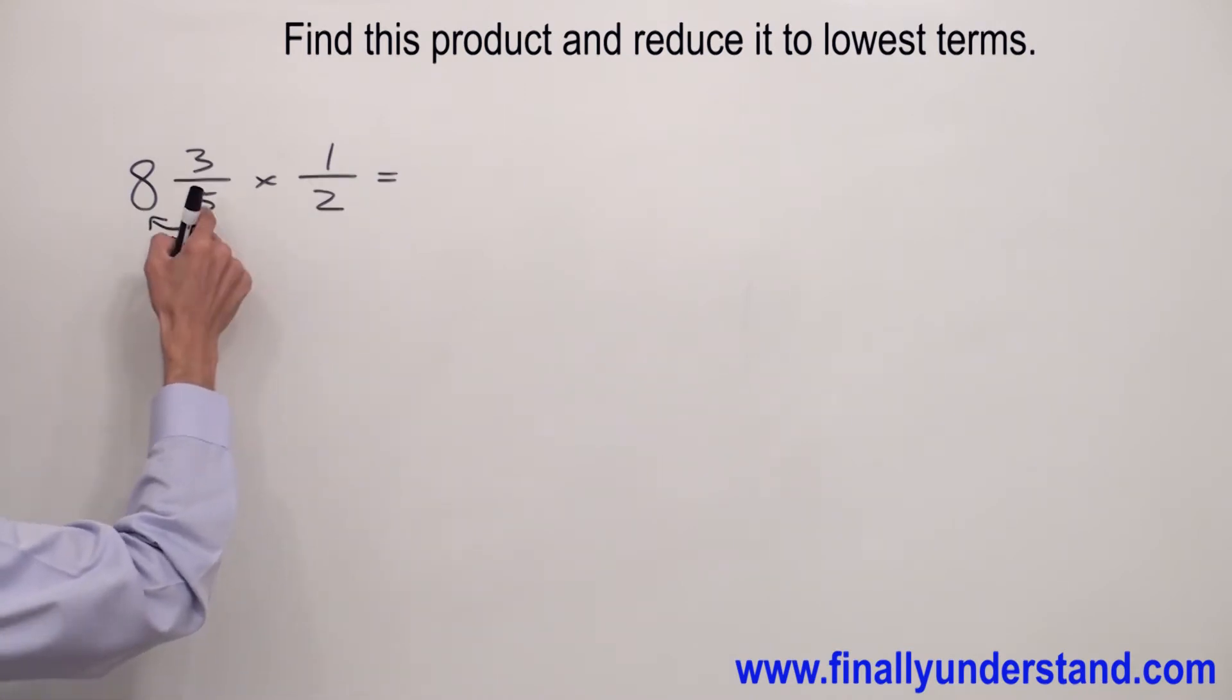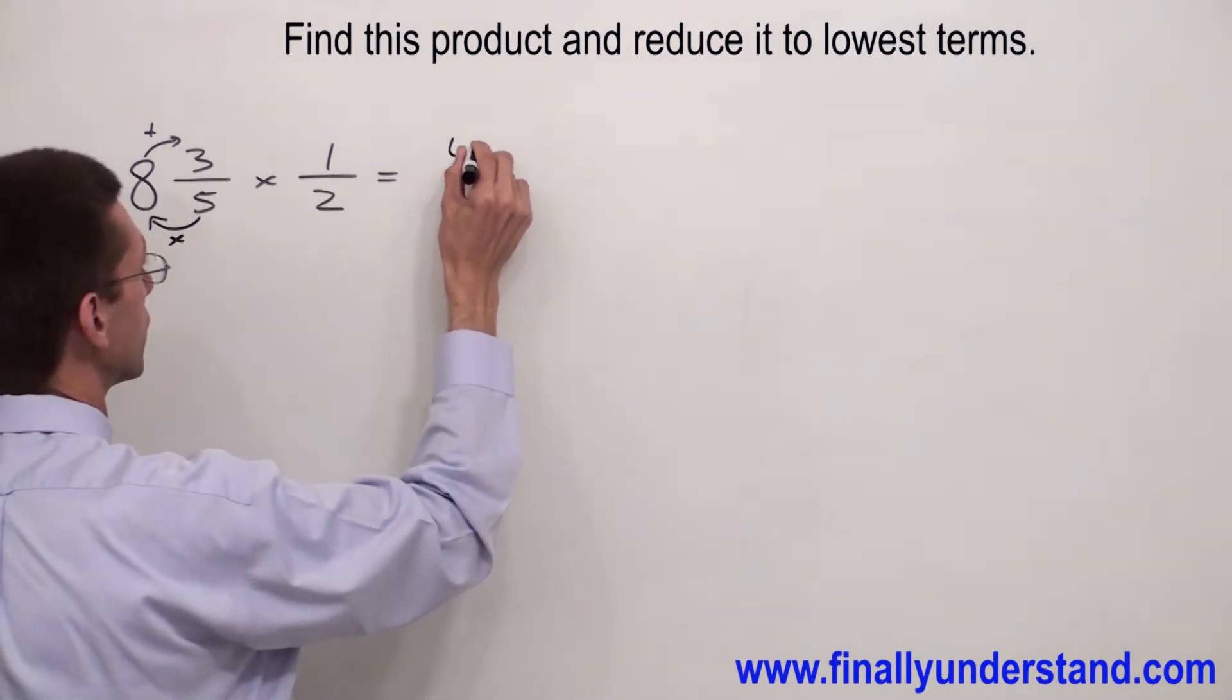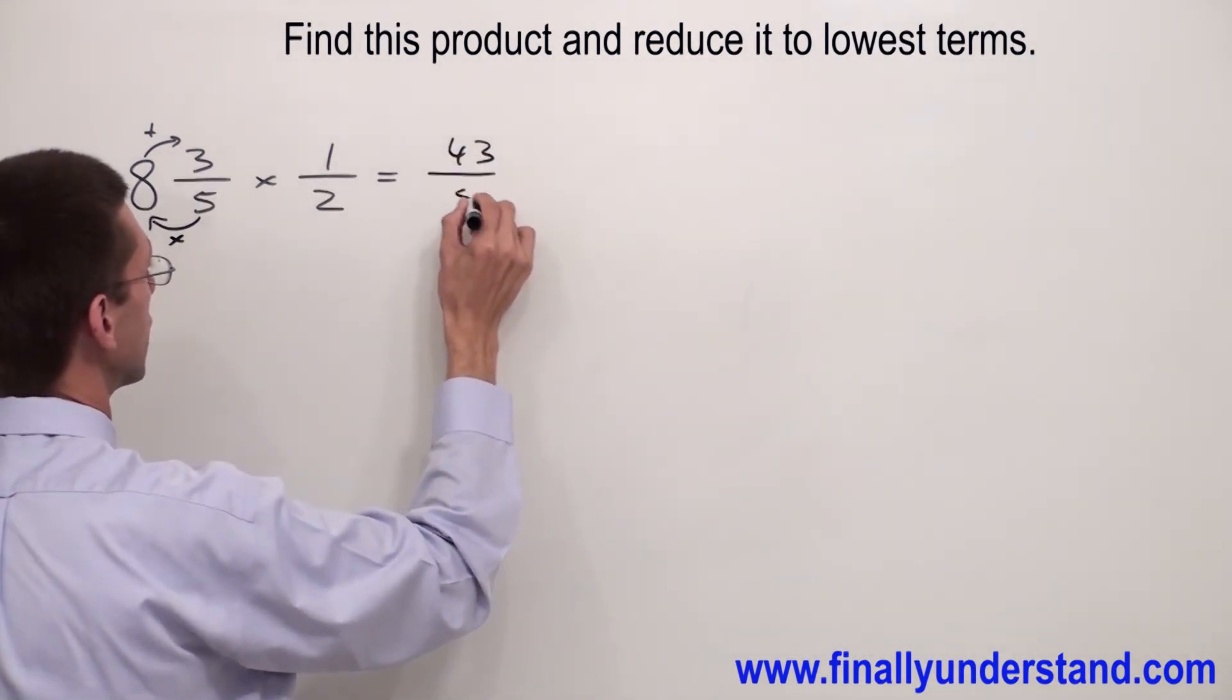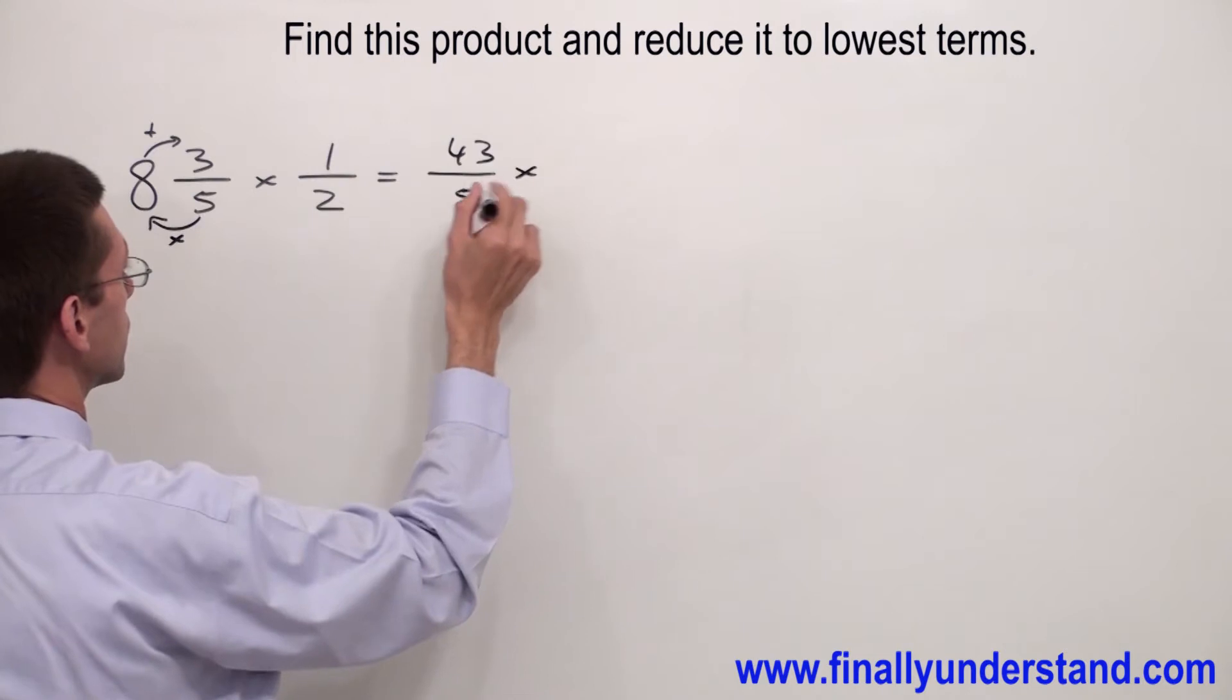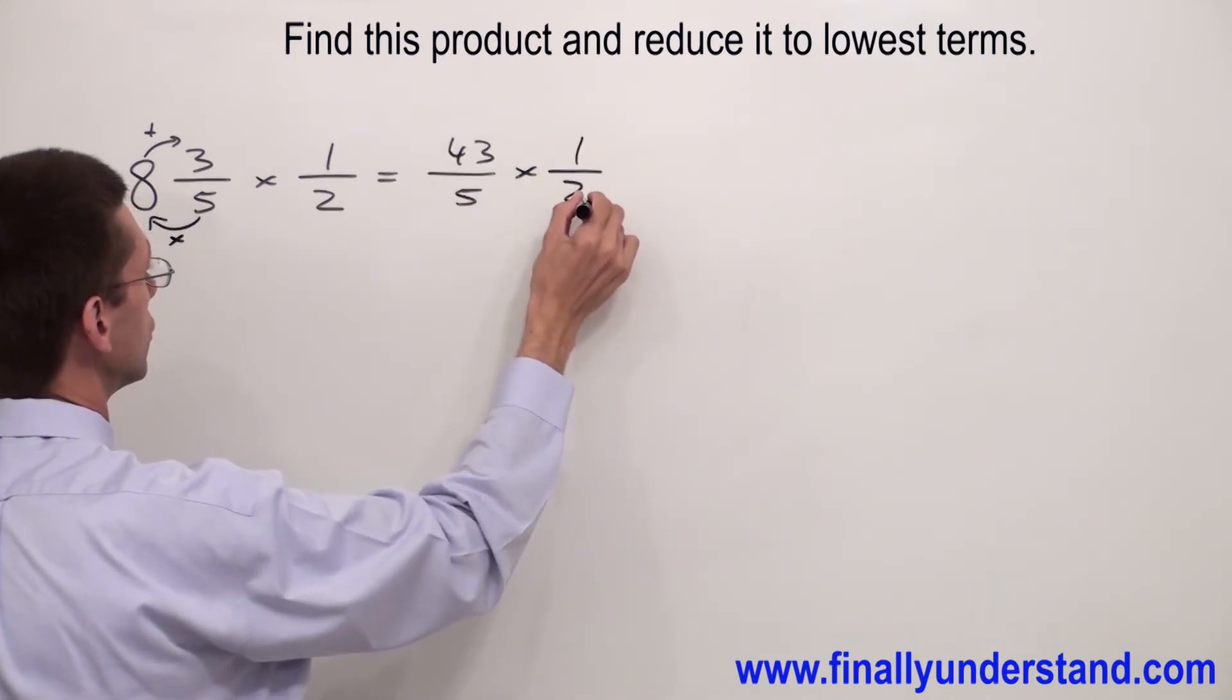You have to multiply the denominator with the whole number, and the result of this multiplication you have to add to the numerator. 5 times 8 is 40. 40 plus 3 is 43. 43 over 5 times 1 over 2.